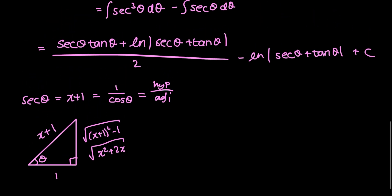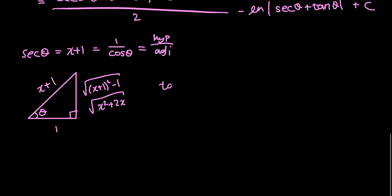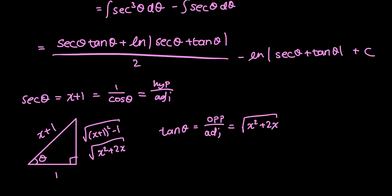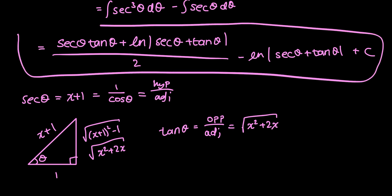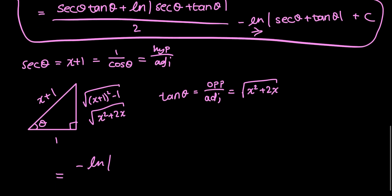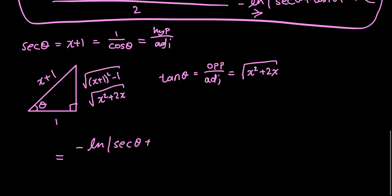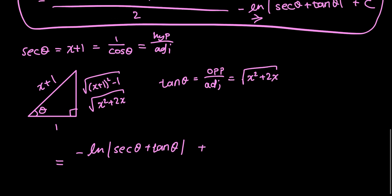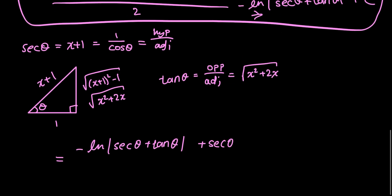The only other trig that I have in my result is tan, and tan theta is just the opposite over the adjacent. In this case, that's just the square root of x squared plus 2x. So, before I even rewrite everything in terms of x, I can write this whole thing as one fraction if I just multiply this natural log term by 2 on the top and the bottom. So, I end up with negative log of secant theta plus tan theta plus secant theta tan theta all over 2 plus C.